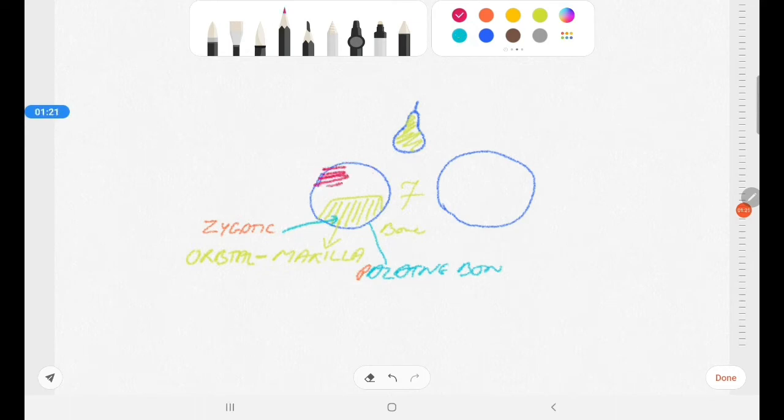Coming to the lateral wall, zygomatic again contributes to the lateral wall and this part is actually where the Whitnall's tubercle is located. Along with the zygomatic bone there is a contribution from the greater wing of sphenoid bone.